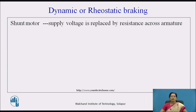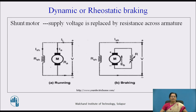For a shunt motor, the supply voltage is replaced by a resistance across the armature for dynamic or rheostatic braking. The armature current direction is downward and the motor rotates in the clockwise direction. For dynamic braking, this armature supply is disconnected and a variable resistance is connected across the armature. The back EMF across the armature causes the current through the armature to reverse, so the current direction is now upward.